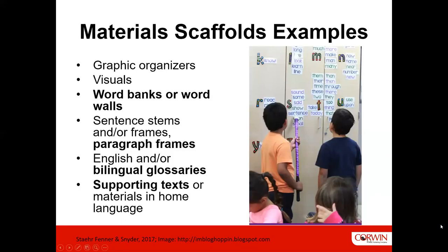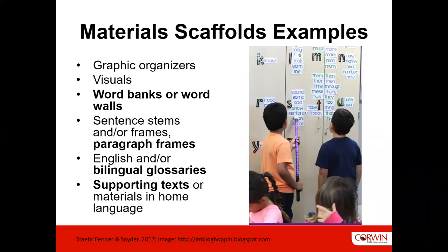Let's talk about scaffolded materials. Some examples are graphic organizers; visuals, which could include pictures; realia — objects students could hold in their hand; short videos; word banks or word walls; sentence stems or sentence starters; sentence frames — a whole sentence with words missing, possibly paired with a word bank; paragraph frames; and English or bilingual glossaries, as well as supporting texts or materials in the home language.